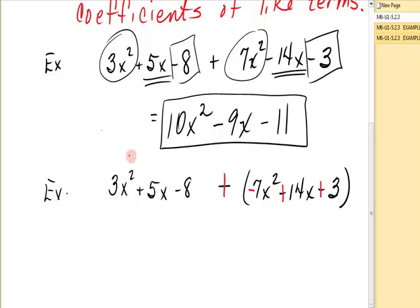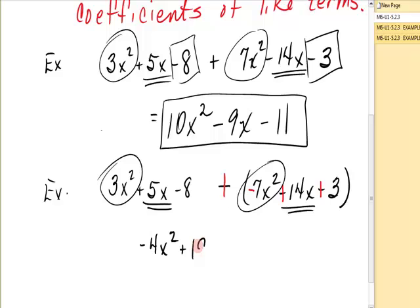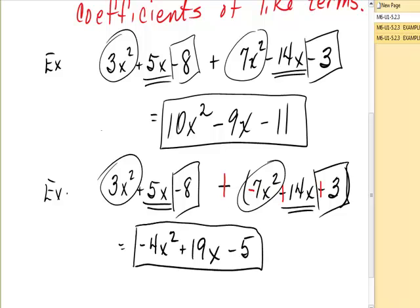Now I have 3x² and -7x² for -4x². Here I have +5x and +14x for +19x. I have -8 and +3, which gives me -5. This is the difference between the two. So now let's look at some more problems to practice.